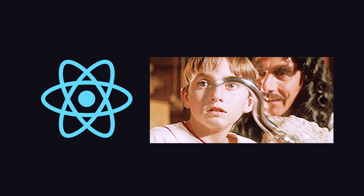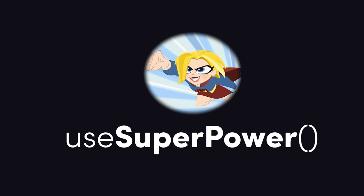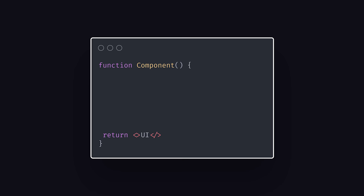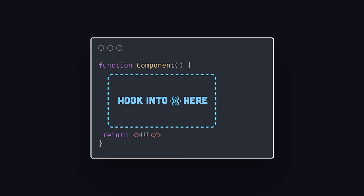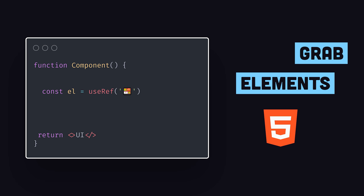React Hooks let you use features of the React framework by calling special hook functions from within a component. We can build static or dumb components in React by writing functions. However, UI components are often dynamic — they may need to change the state of their data, react to lifecycle events, access elements from the DOM, among many other things.